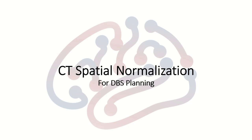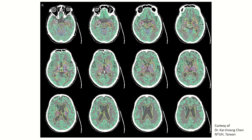In this video I'm going to show how to work out CT spatial normalization for DBS planning. Here we normalize the CT image to a standard space so that we can bring in subcortical regions and nuclei. Especially for DBS planning, this will help us to know where the electrodes are located.